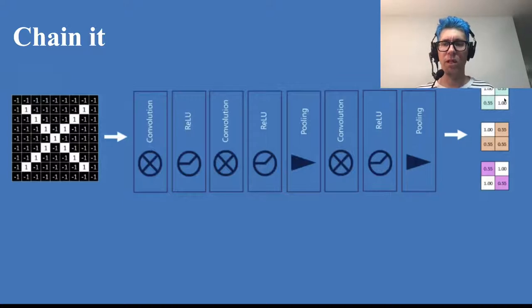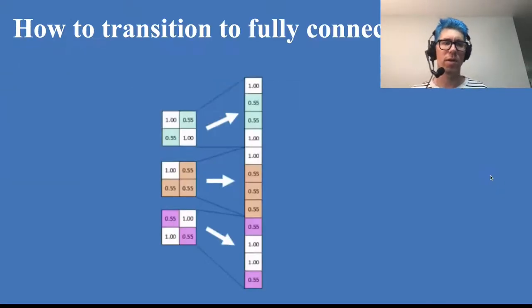So what would the output of that be? Well, in this case, it might be that for one feature we would get this, for another we'd get this, for the third one we'd get this.